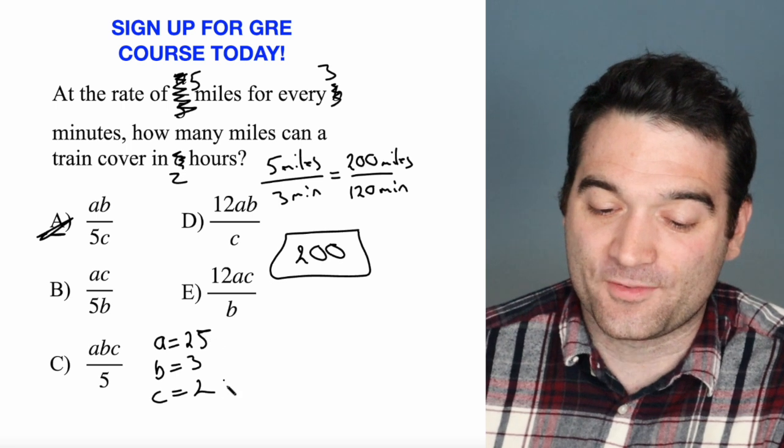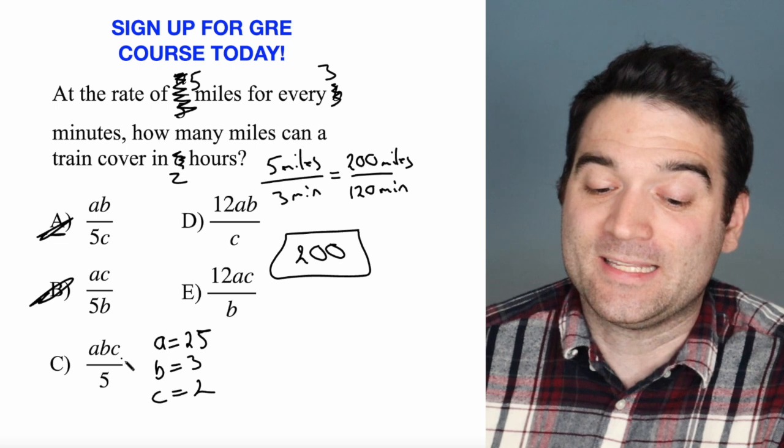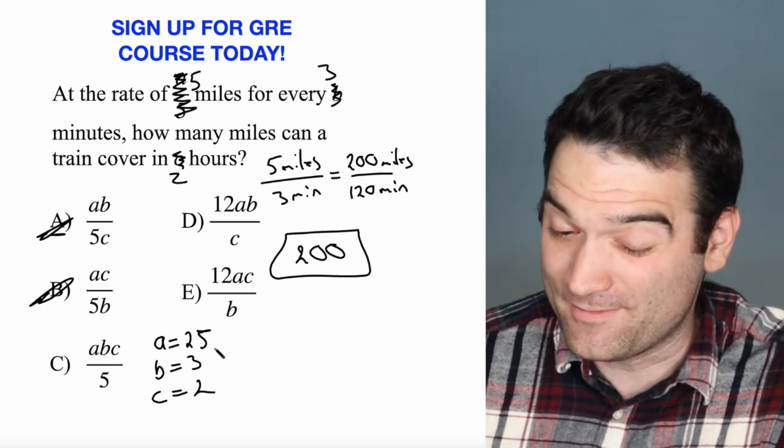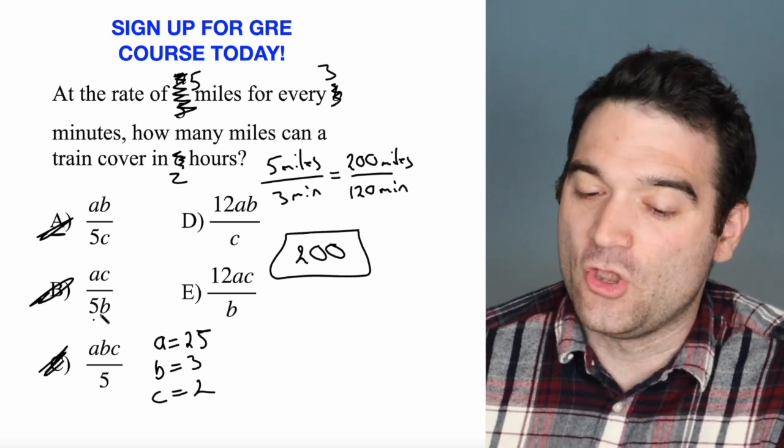How about A times C? That's 50 divided by 15. No. How about A times B times C divided by 5? So that's 75 times 2, 150 divided by 5? No.